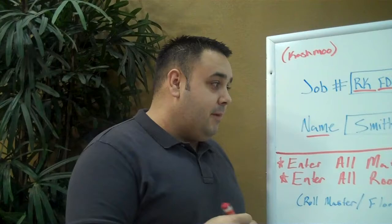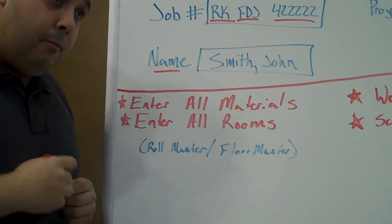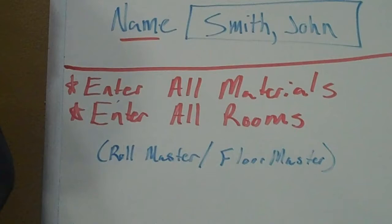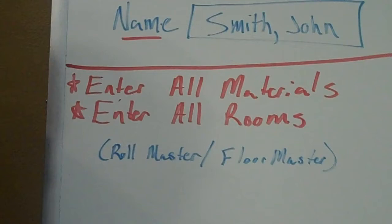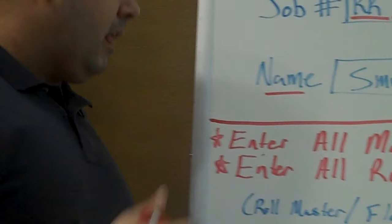Next thing I want to go over on behalf of the estimators is four points that the estimators are finding important to them — and I think they're important as well. First: enter all materials. This is in Rollmaster when we're F5-ing over to Floormaster. You want to make sure any product that the customer may have us give the bid on is entered in the computer prior to the estimate.